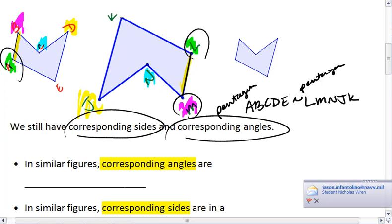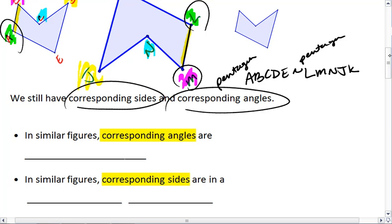It no longer means that all the corresponding sides are congruent, but we do notice something special about them. So in similar figures, corresponding angles are still going to be congruent.